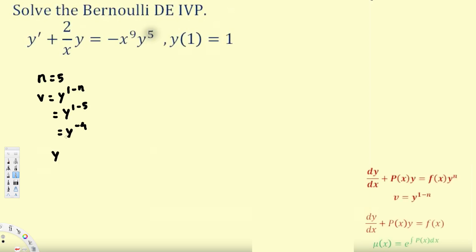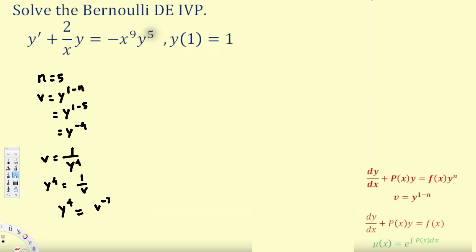Therefore, y is equal to — let's try this a different way — v is equal to 1 over y power 4. Therefore, y power 4 is equal to 1 over v. Therefore, y is equal to v power minus 1. So this is y power 4, and we have to take the fourth root, meaning we multiply the exponent by 1 over 4. So y is equal to v power minus 1 over 4.